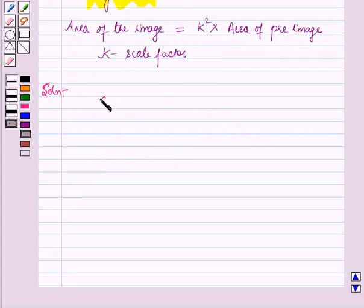Given scale factor k is equal to 3. Also given, side of the square is equal to 5 cm.